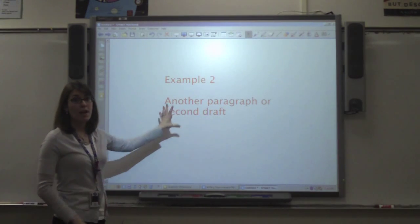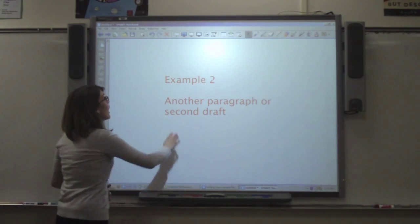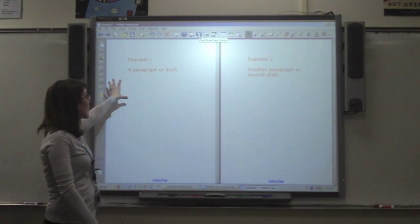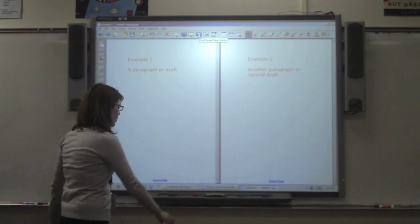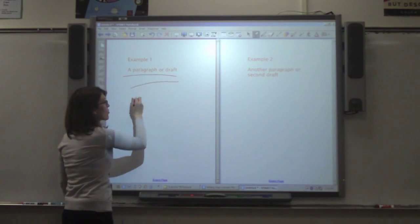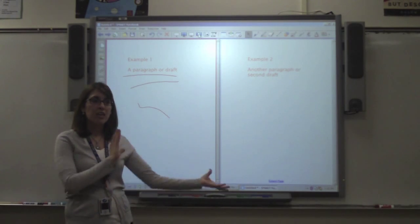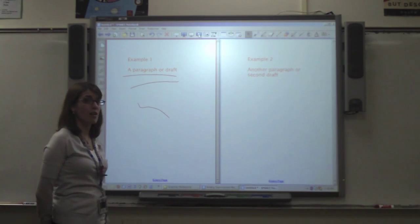So for example, if I'm on example number two, I just hit dual page view and now I can see example one and example two together. I can have my students write on the page and highlight things or underline things that may be congruent to one another in the lesson.